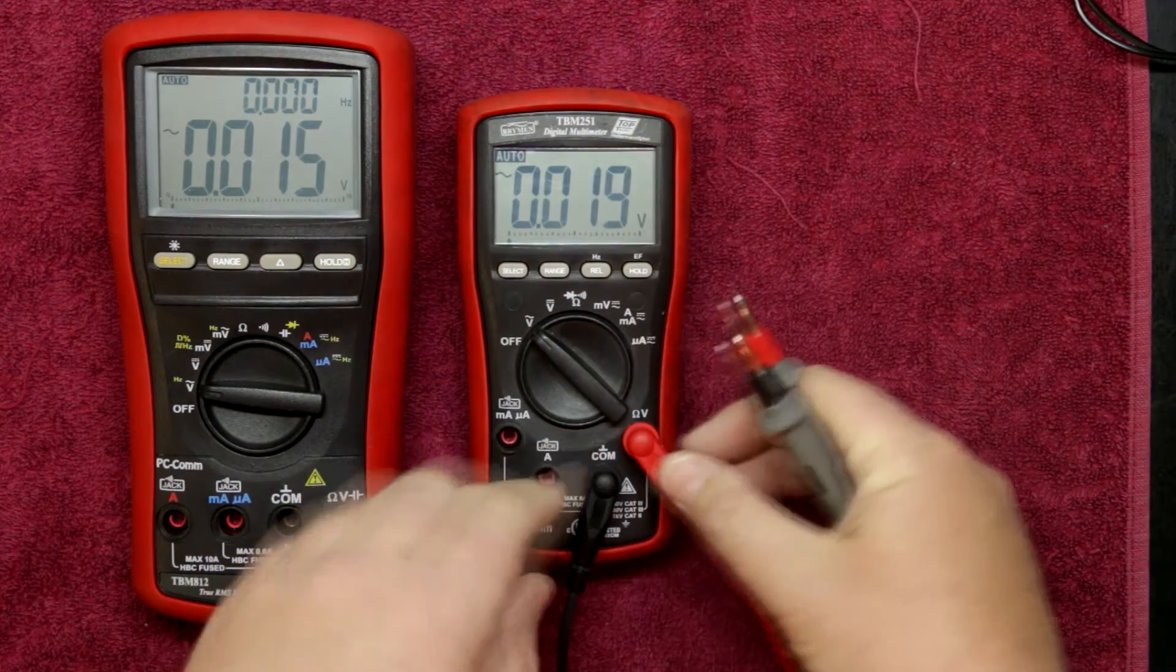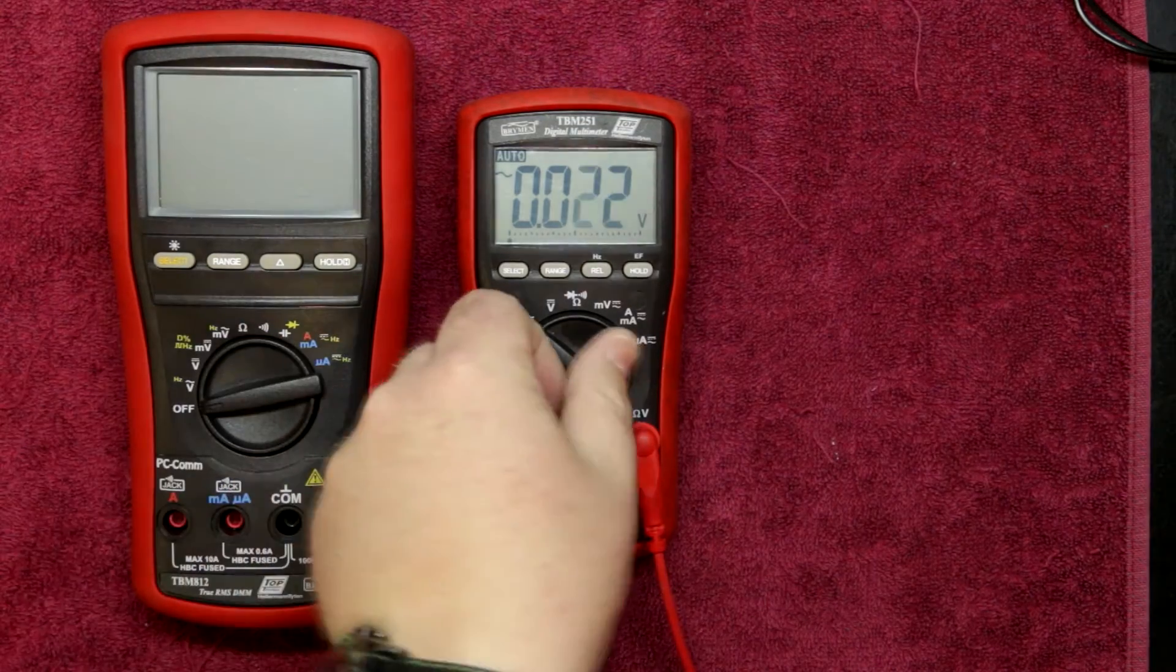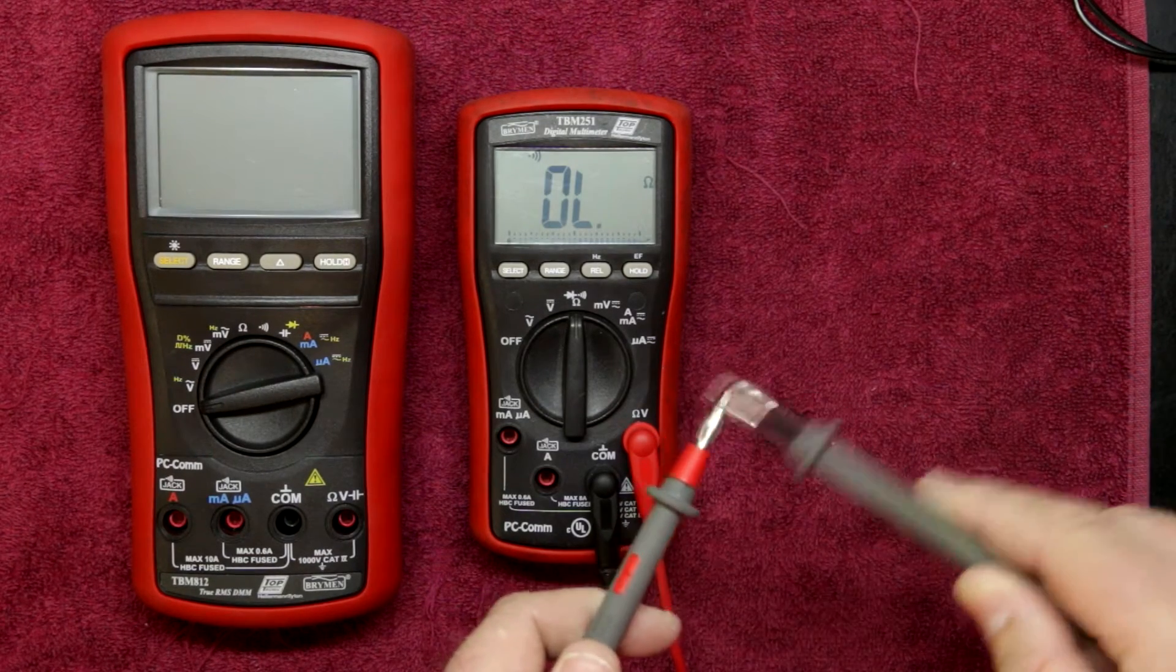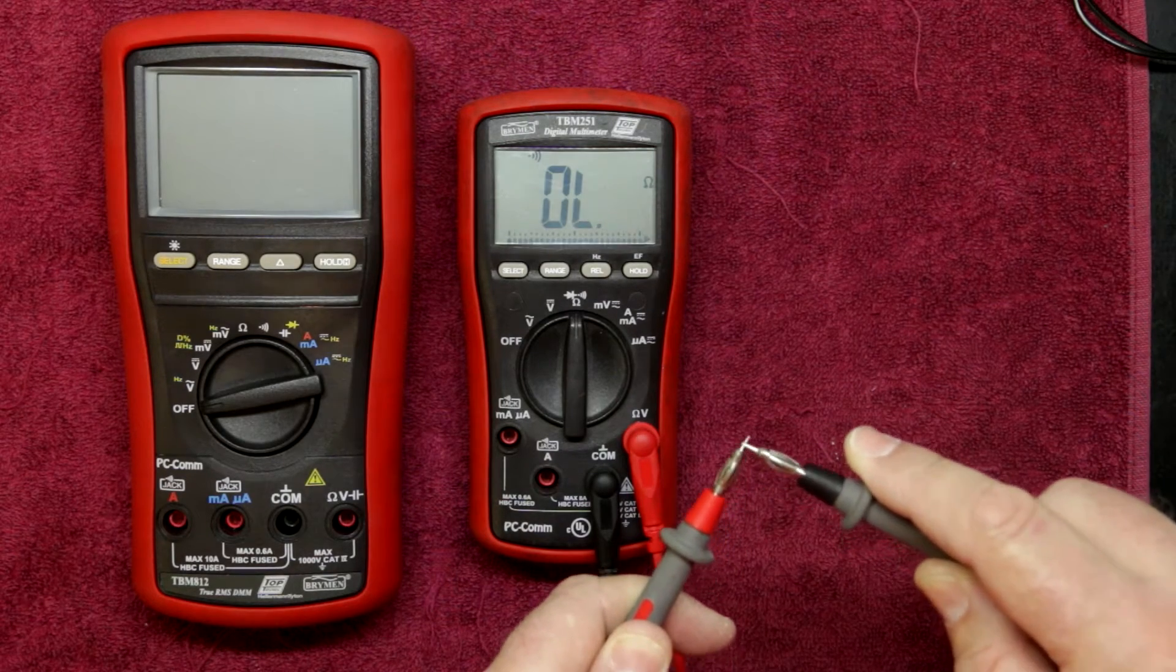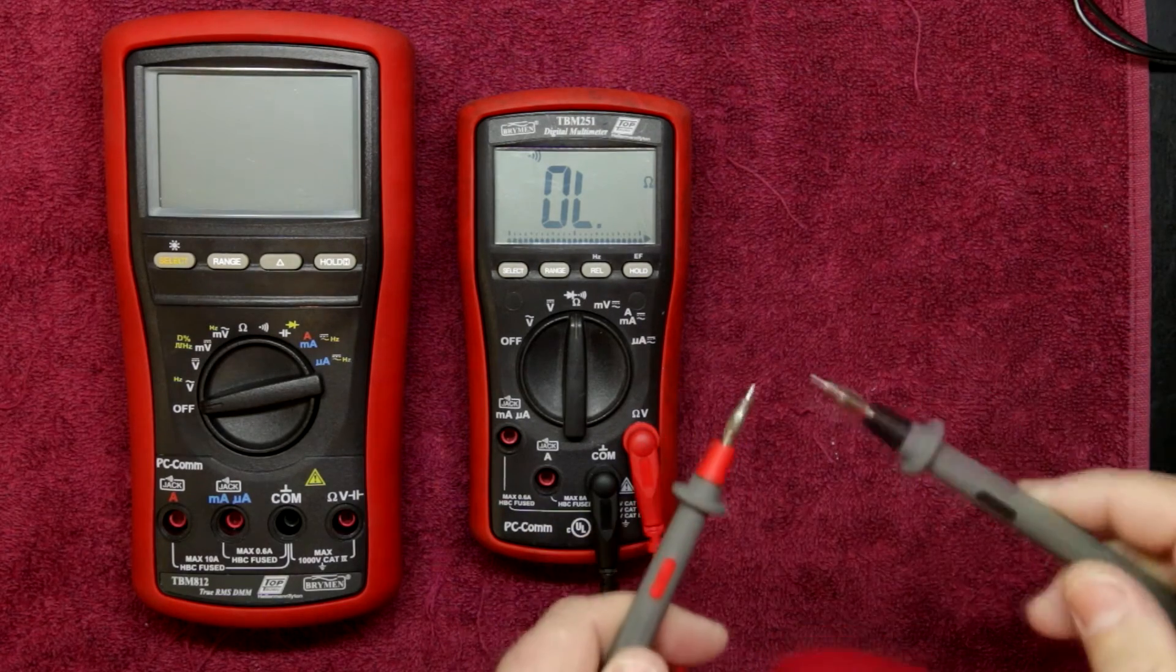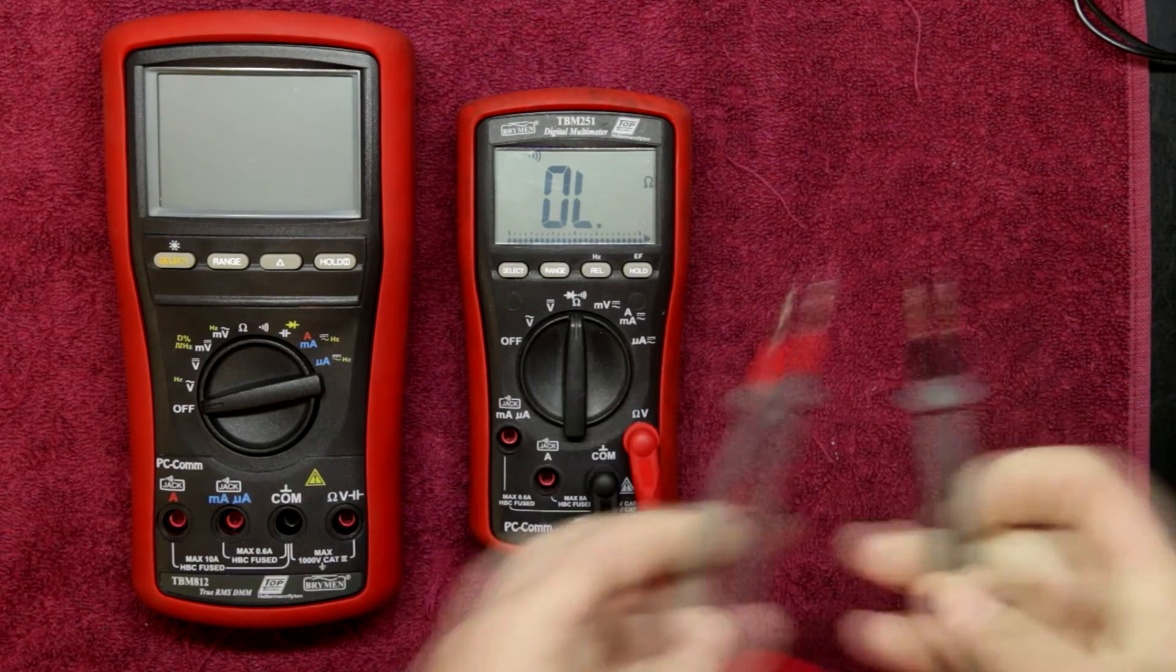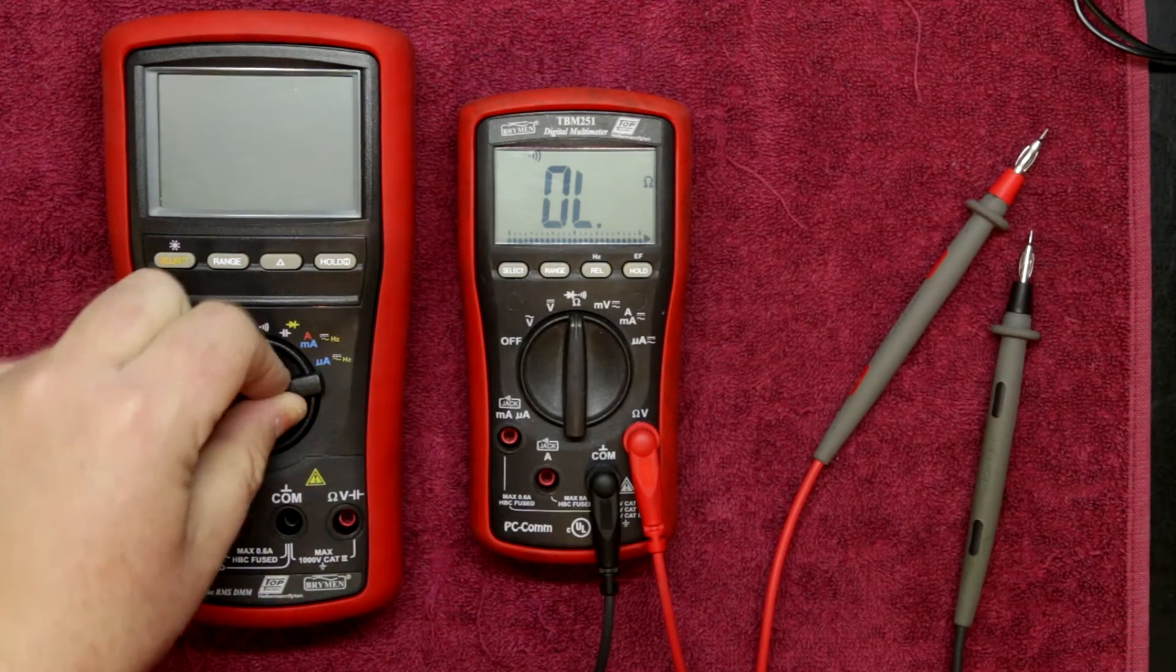Now a few more things we can look at, well we have the leads in this meter over here is we can look at the continuity tester. As you can see it is latching and it is relatively fast. It's not quite on par with say the fluke or something like that but it is relatively quick, good enough for most intents and purposes.